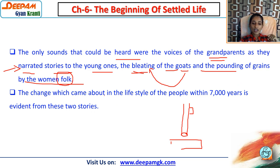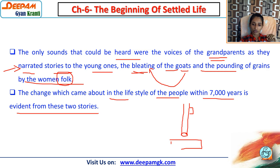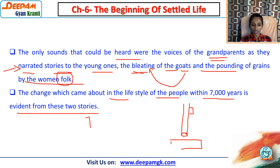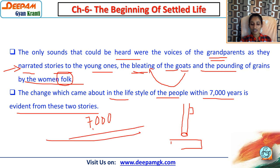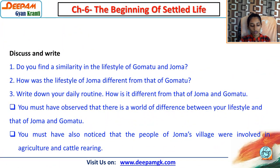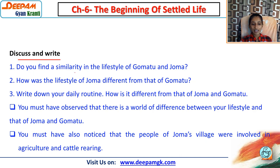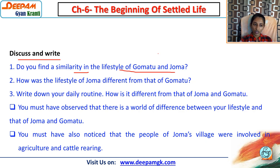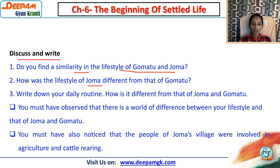The changes in the lifestyle of the people within 7,000 years are evident from these two stories - Gomatu and Joma. If we find similarities, both had groups or tribes. The main difference: in Gomatu's life there was no fixed settled place, while in Joma's life the place was fixed.